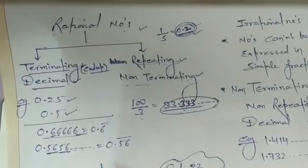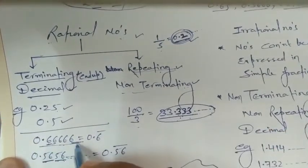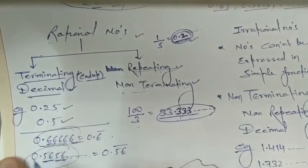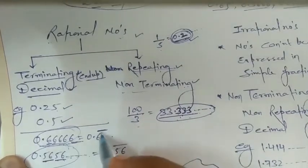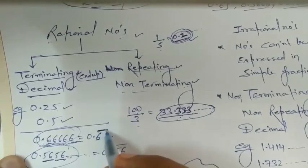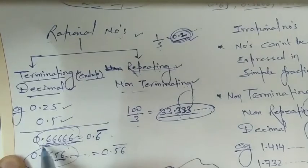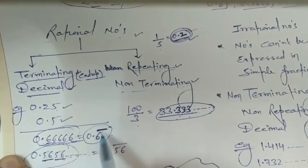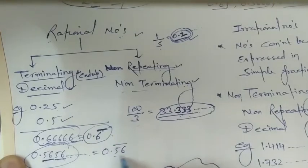These are all examples of rational numbers, and they can also be expressed in the form of P upon Q. A bar notation is used — the bar is placed on the digit after the decimal which is continuously repeating. For example, 0.6 bar means 6 is repeating. For 0.5656..., we put the bar on 56 and write 0.56 bar.